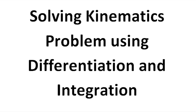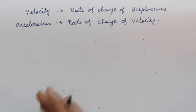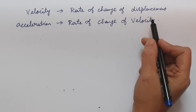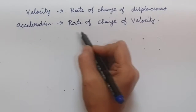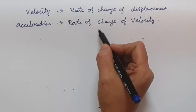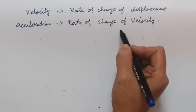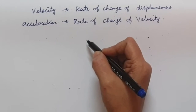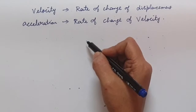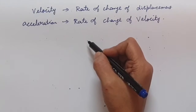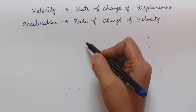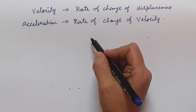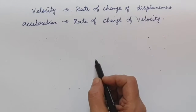Solving kinematics problems using differentiation and integration. Velocity is the rate of change of displacement, and acceleration is the rate of change of velocity. As differentiation and integration are inverse procedures, we can find the velocity and displacement if we know the acceleration.